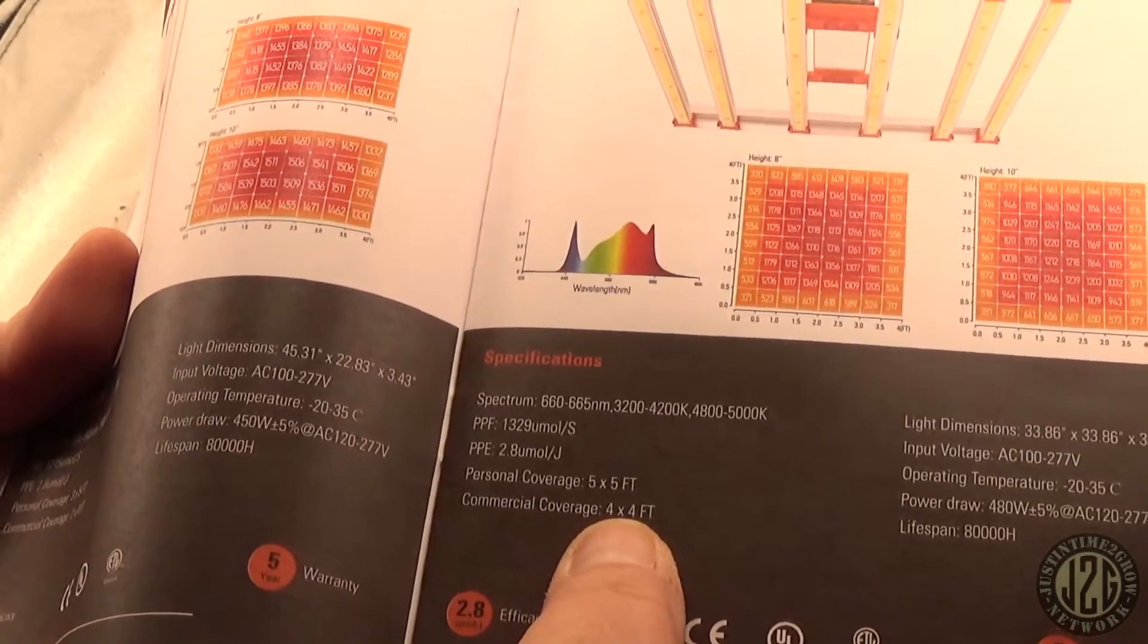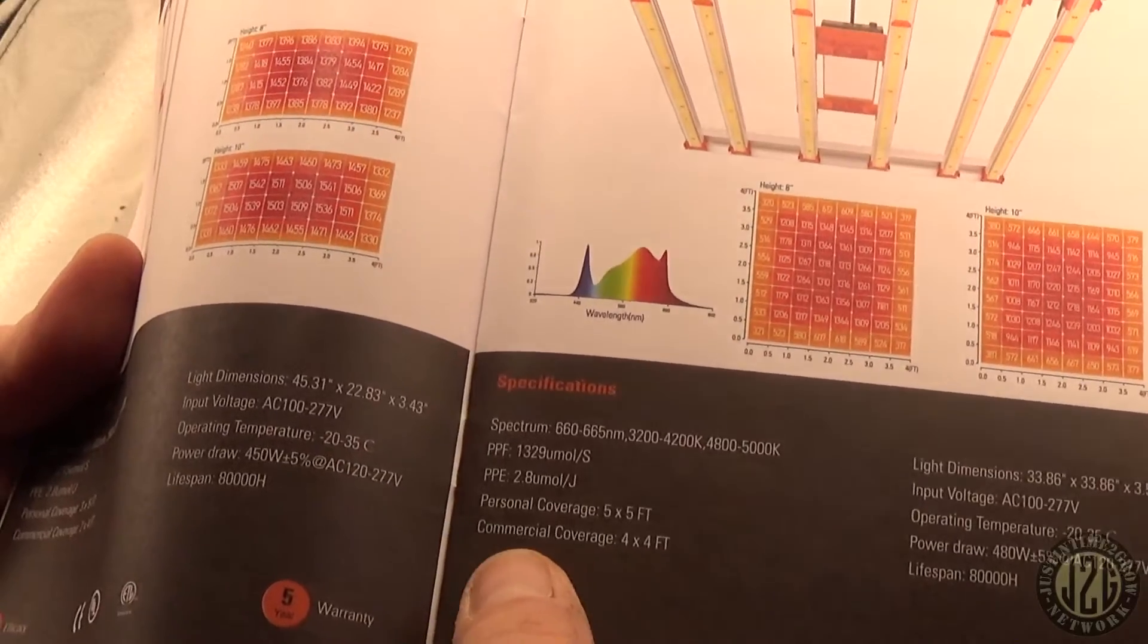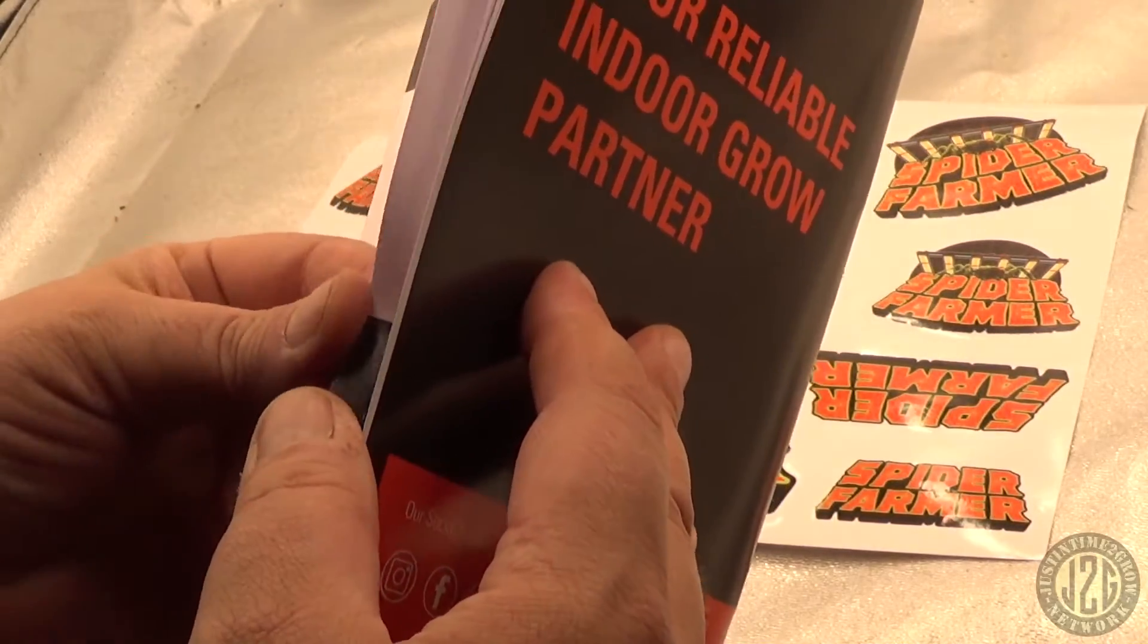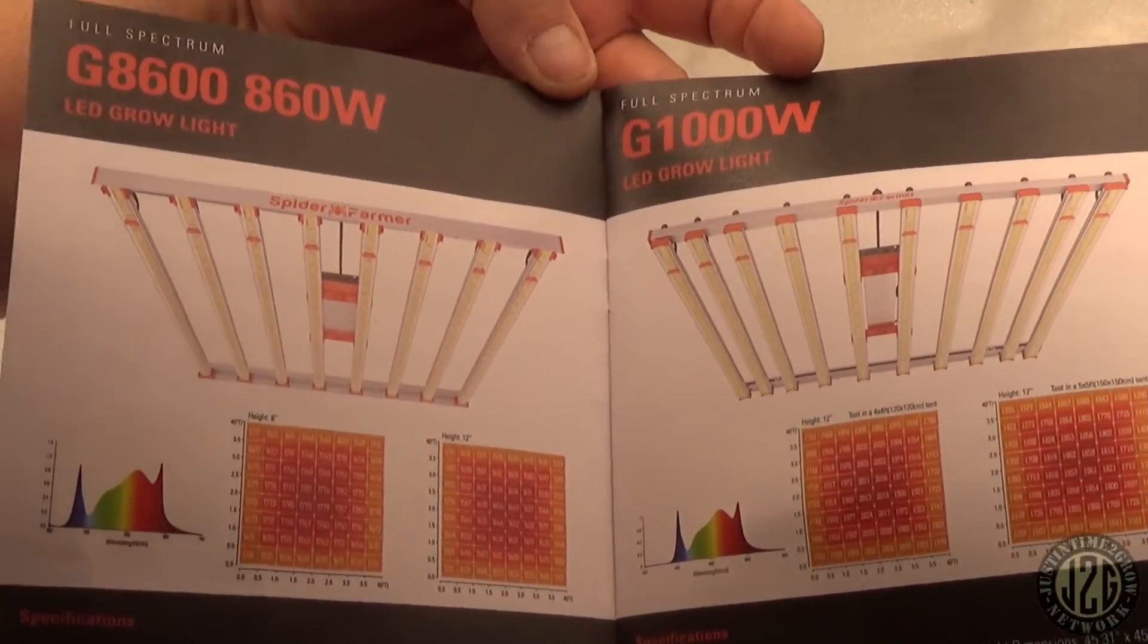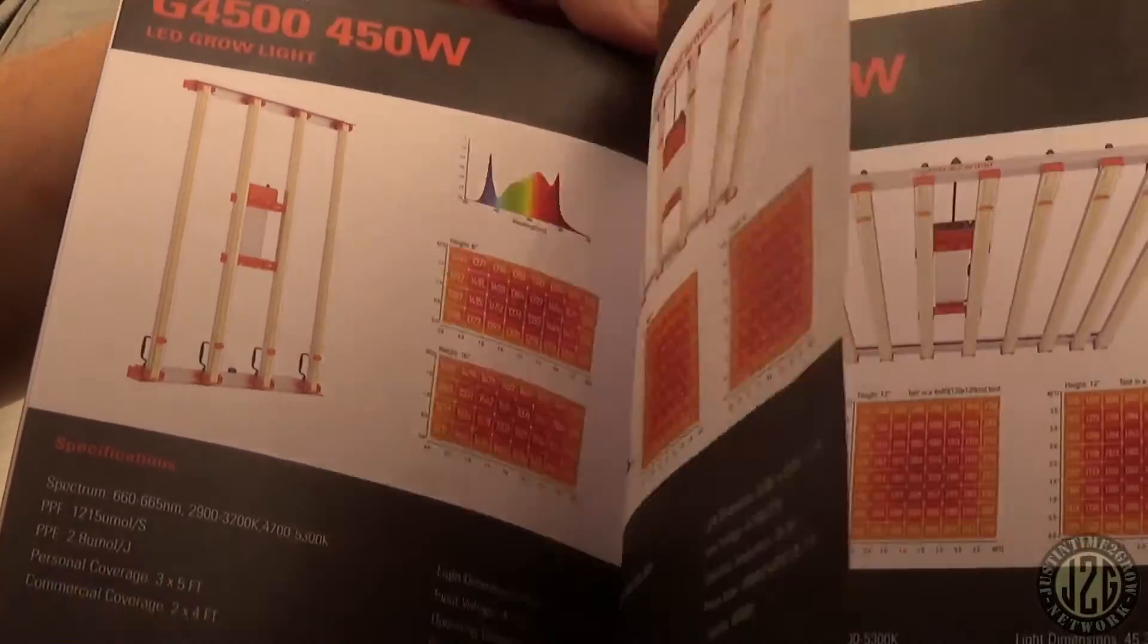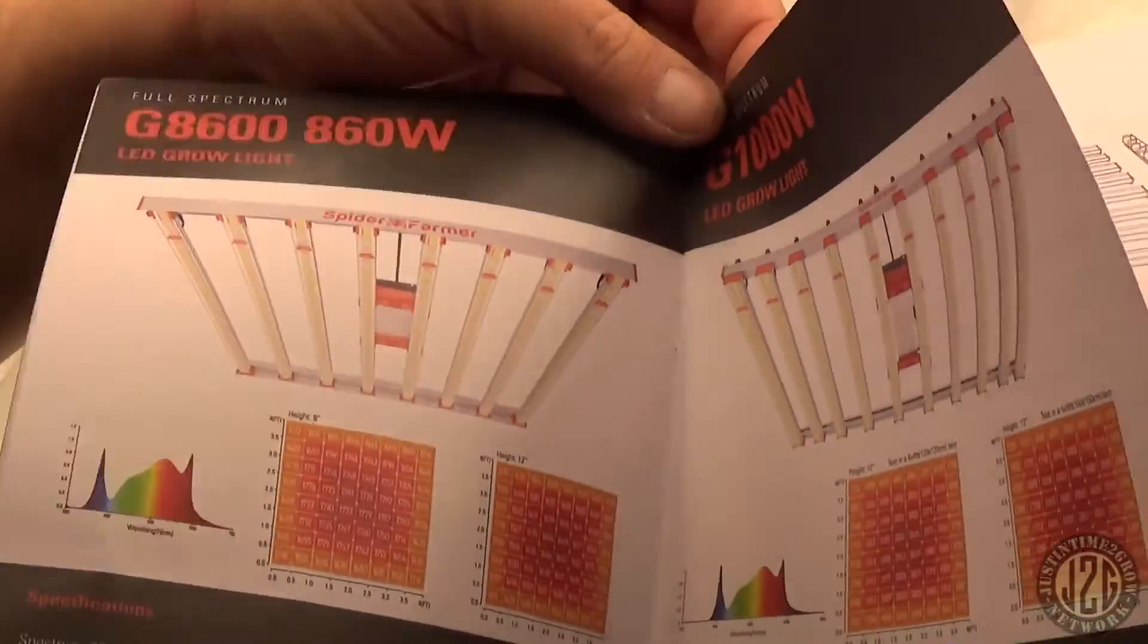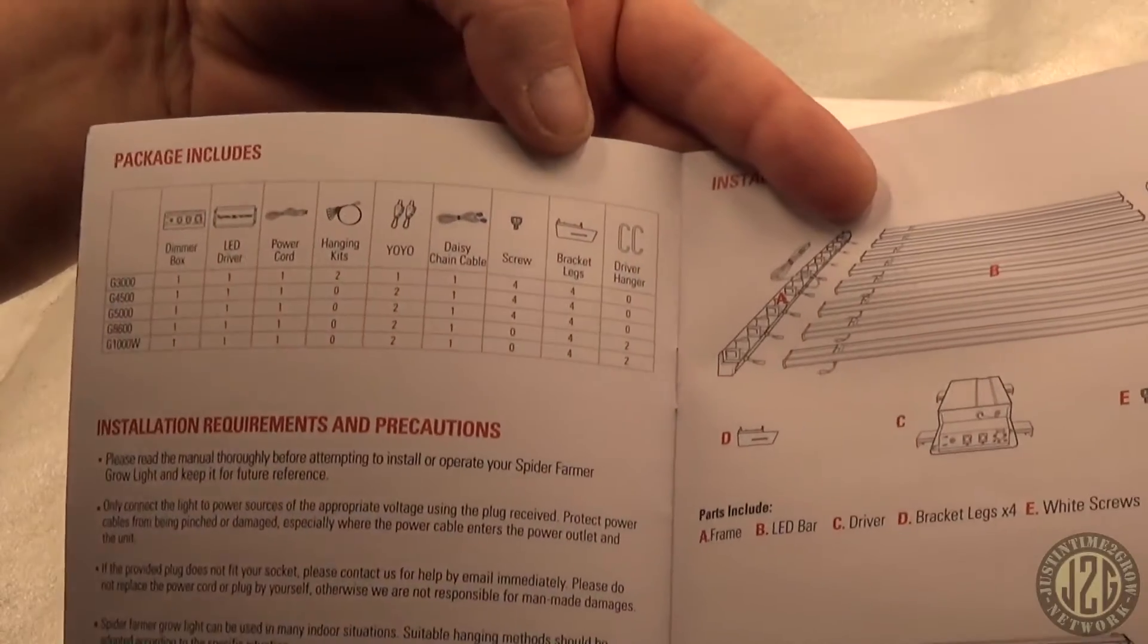Personal coverage 5x5, commercial coverage 4x4. I would actually say commercial coverage 3x3, personal coverage 4x4 personally. 480 watts is not a lot for a 4x4. You really want to be around 600 or so. This is some more of their models here. They go all the way up to 860 watts though on the next one, which is going to be a banger in a 4x4.